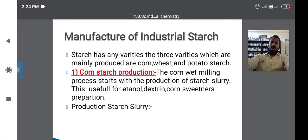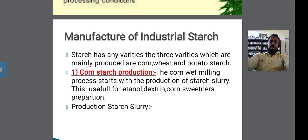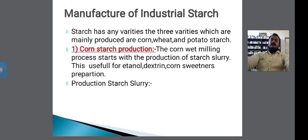The corn starch production: the corn wet milling process starts with the production of starch slurry. This corn wet milling process is useful for ethanol, dextrin, and corn sweetener preparation.